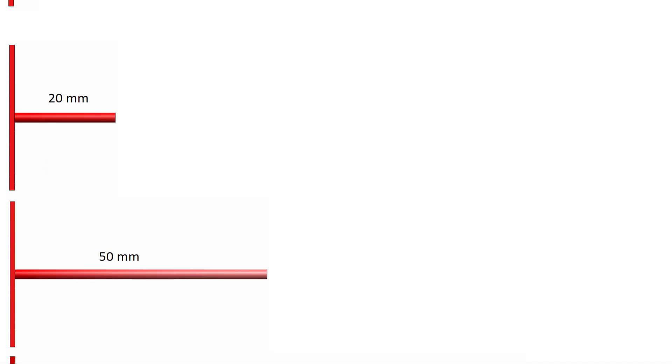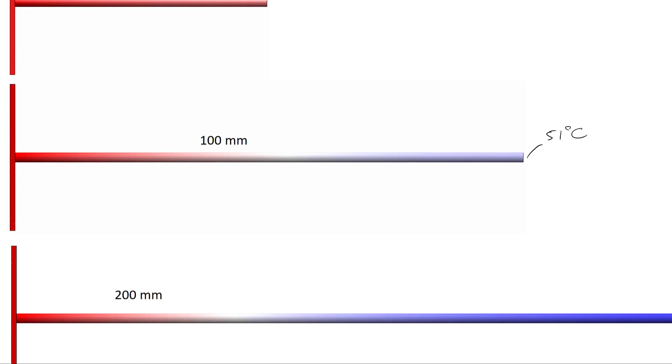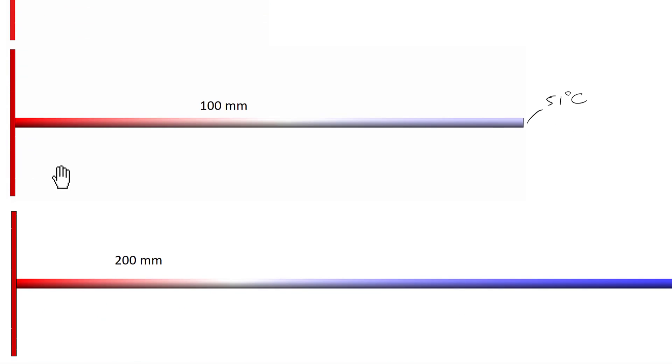So as we continue, 20 millimeters, 50 millimeters, the temperature becomes a little bit smaller. Here we are at 100 millimeters. It's the same analysis. This temperature again was equal to about 51 degrees C according to the analysis. So here at this point it's not a very reasonable approximation to say that's equal to the temperature of the base. The temperature of the base being 100 degrees. Here we are at a 200 millimeter fin.